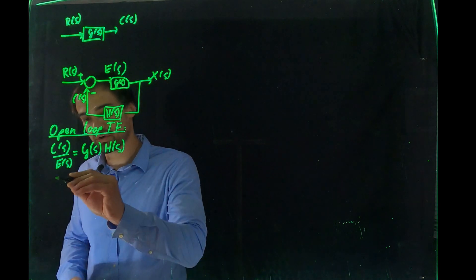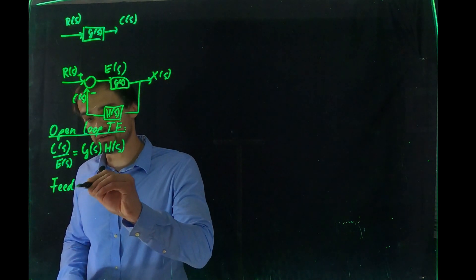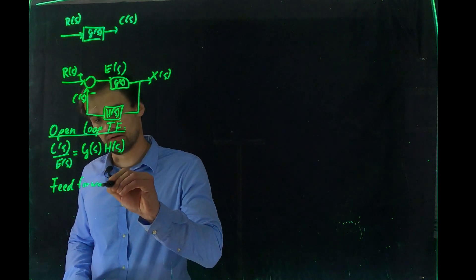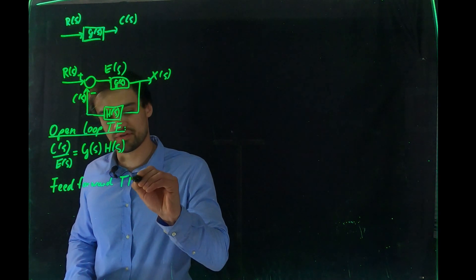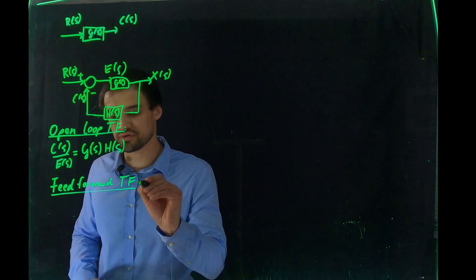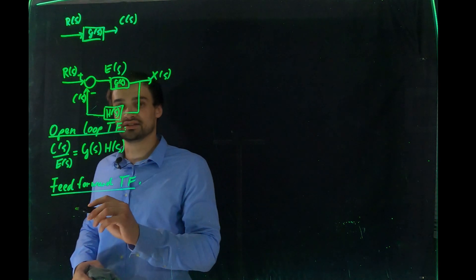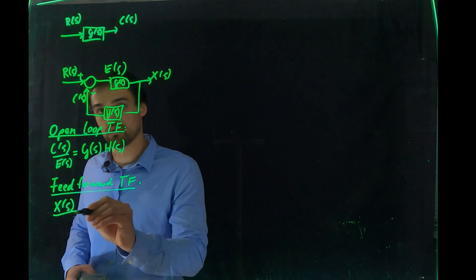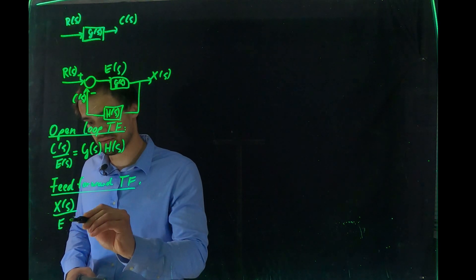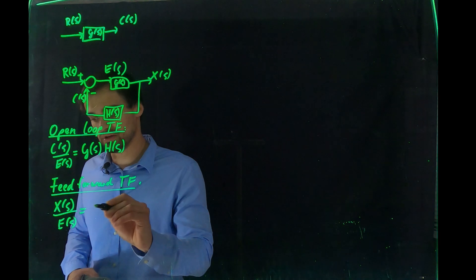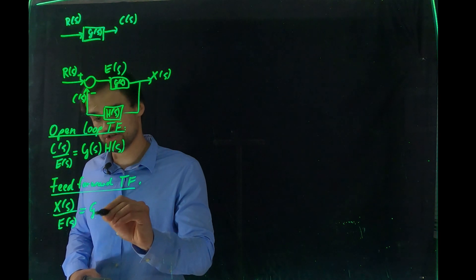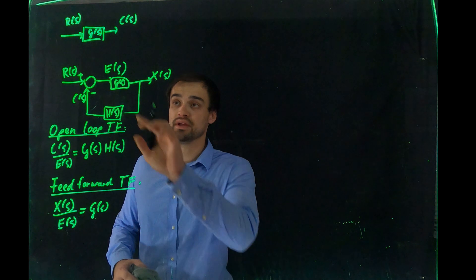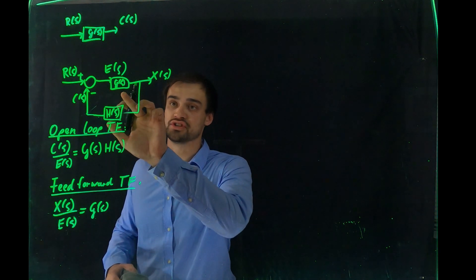On the other hand, we can define the feed-forward transfer function. The feed-forward transfer function is X(S) over E(S), which equals G(S). The path for the feed-forward transfer function goes from E(S) through G(S) to X(S).